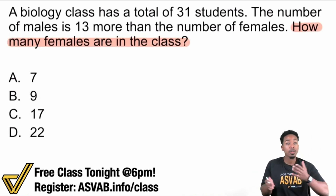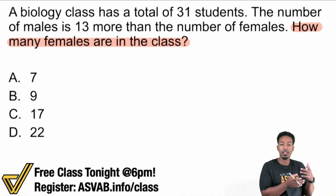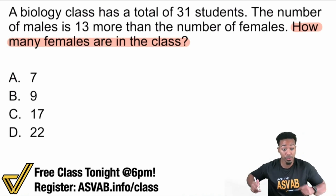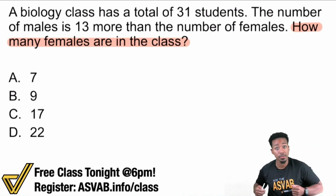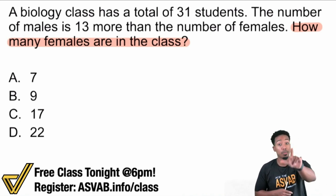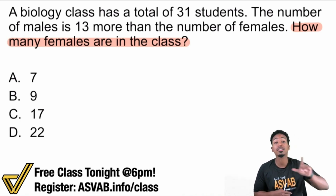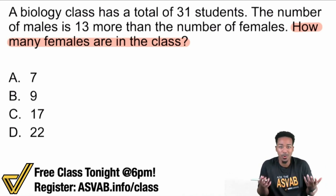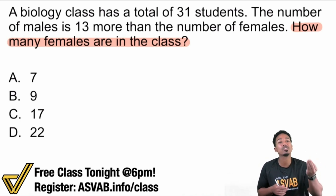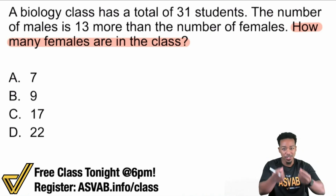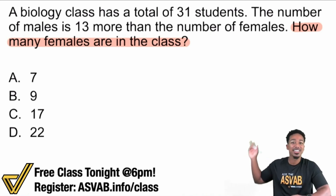That's pretty straightforward, right? Would you rather be given a ton of information — hey, there are 31 students, the number of males is this many more than females — or would you rather start off with: your goal is to find out the number of females? The second one makes so much more sense. If before you're thrown into the wild, you knew what you're up against, that's what you want.